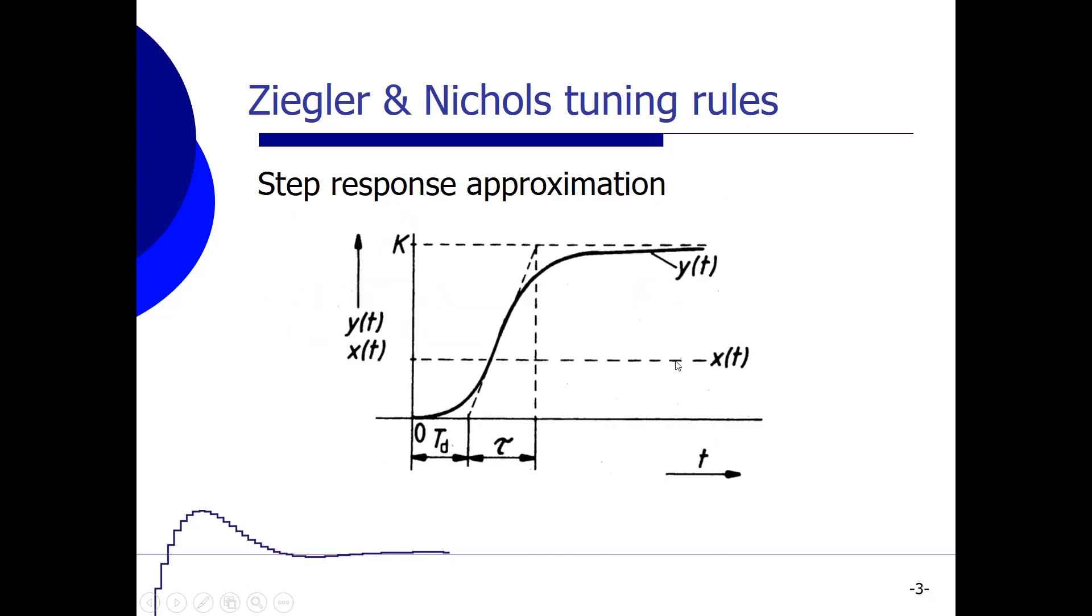For the step response method, we apply a step to the input of the system, x over here. And then the system response probably looks like this, like a signal y. And we can say, this is a kind of first order behavior, plus we have a delay over here.